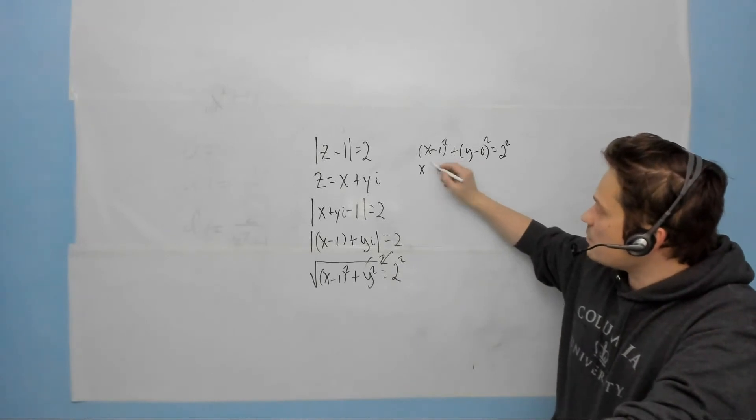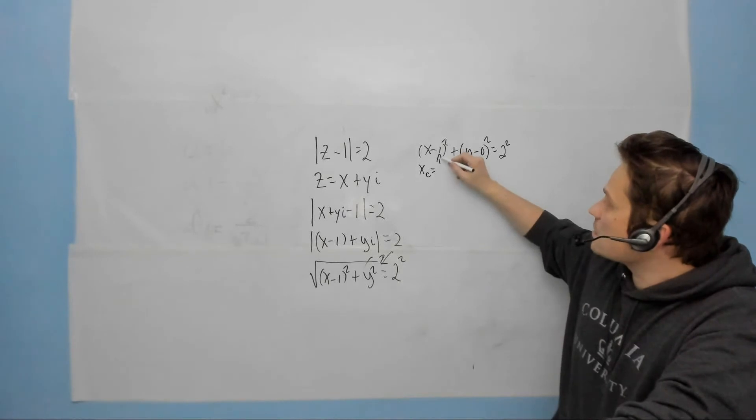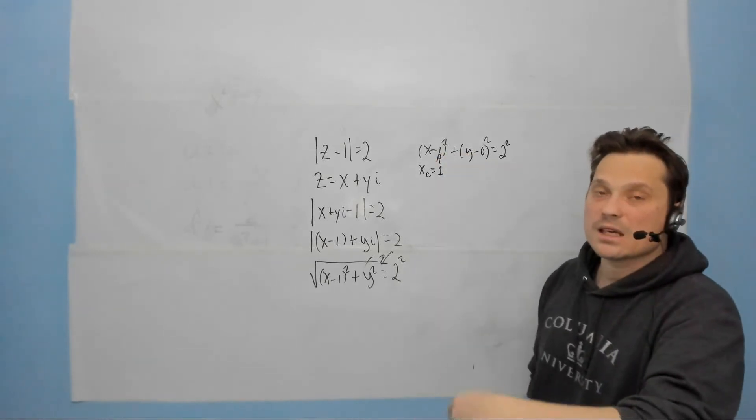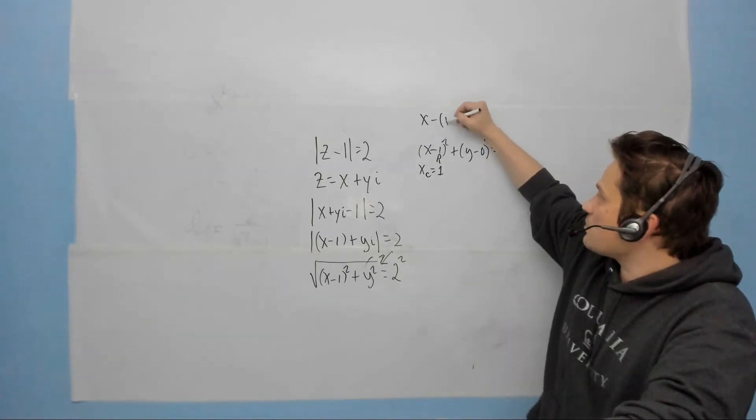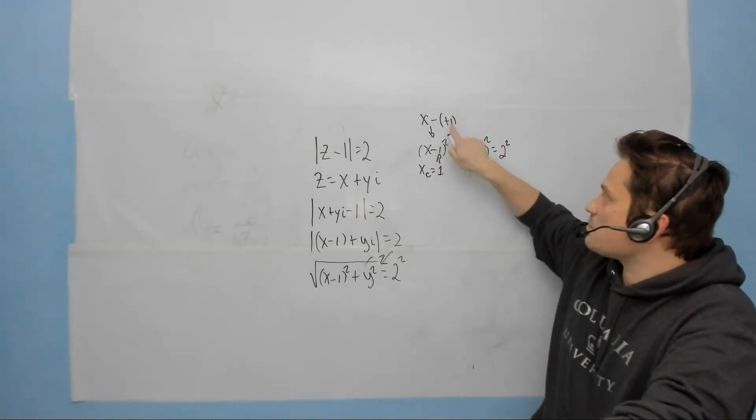Let's identify some key pieces of information, so x sub c for the x-coordinate of the center. That's equal to this value 1. Do not take the negative 1. When you say x minus 1, if you wanted to, you could imagine it's really x minus a positive 1 this way. That's a way to imagine x minus 1, so it's positive 1 here.